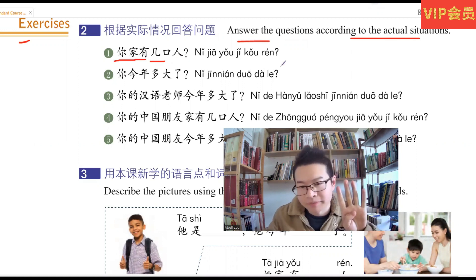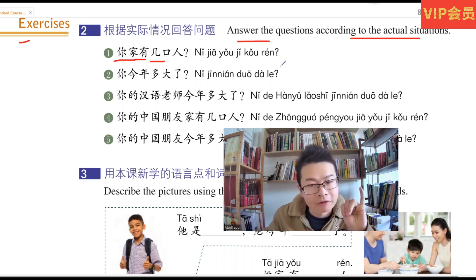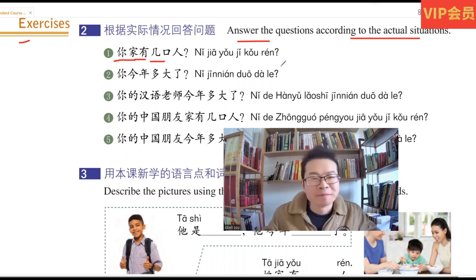我家有四口人, four people. 爸爸, 妈妈, my parents, and I have a little brother and me.